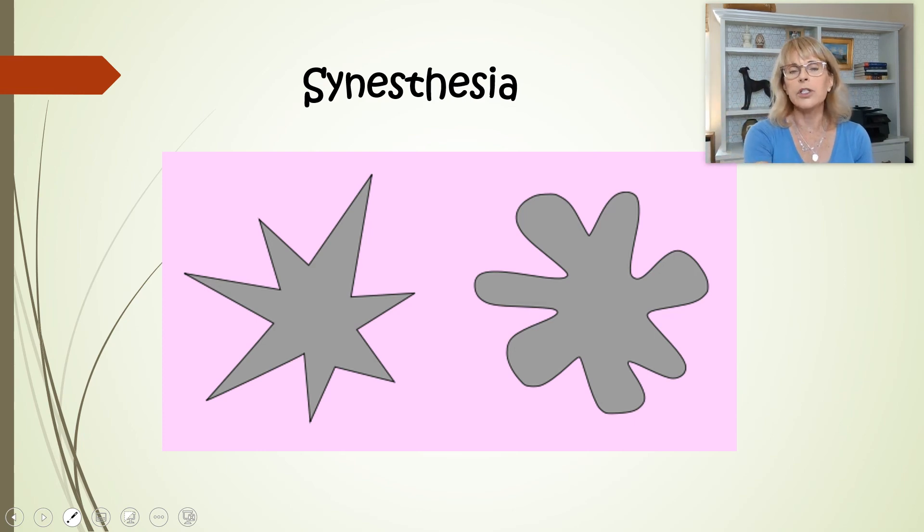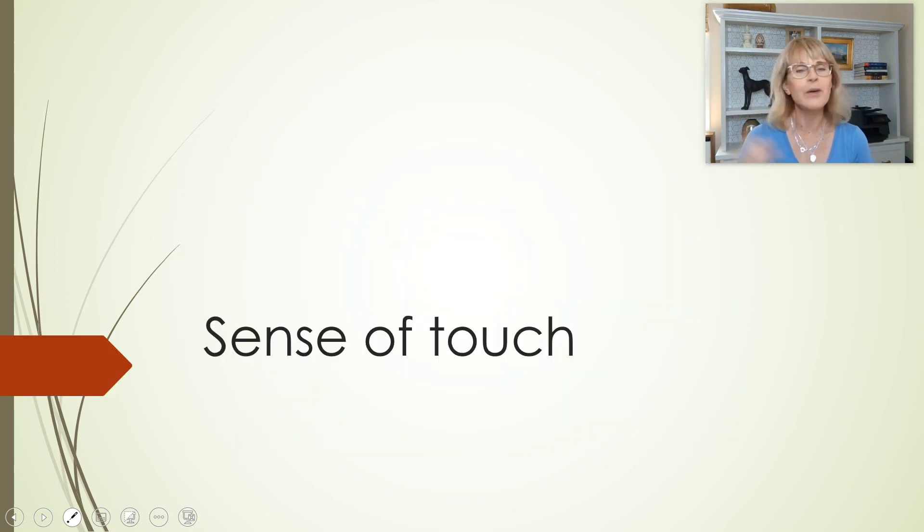It also allows us to think theoretically. In other words, I don't need to be holding these two images to come up with a solution for which one would make a better knife, right? I can take what I'm seeing as two-dimensional, imagine it three-dimensional, and imagine the way the three-dimensional one would act as a knife. Kind of interesting. Ready? We're going to start there at the beginning of our next lecture with the sense of touch.